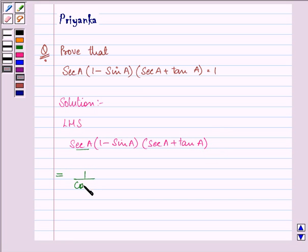Here also we can write secant A as 1 upon cos A and tan A as sin A upon cos A.